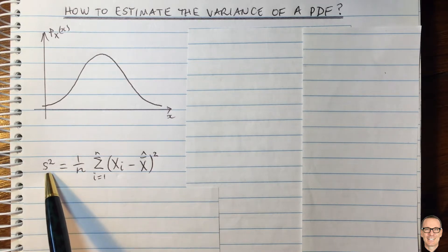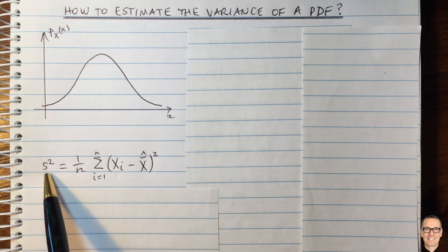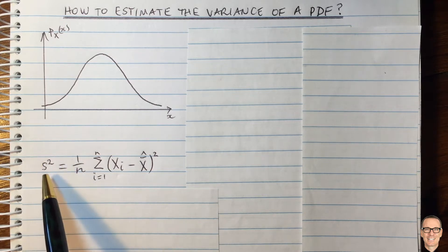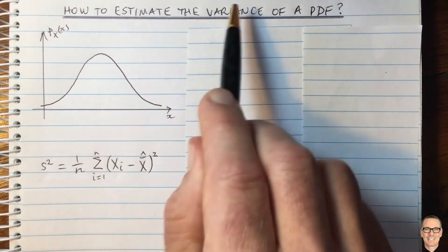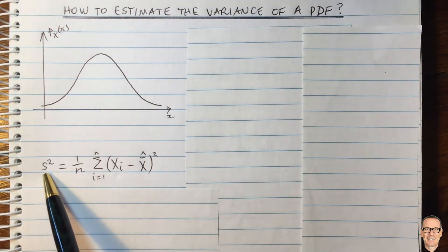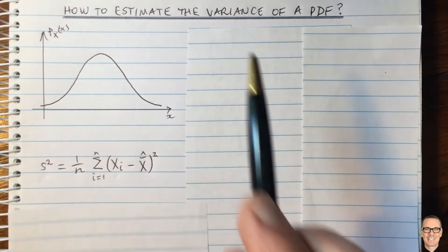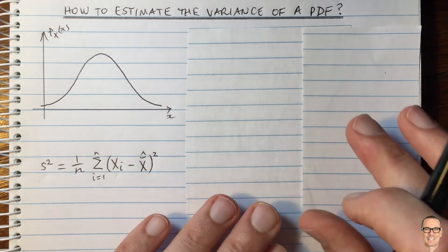We would now like to know something about the mean and the variance of this random variable. This is where it can get a little bit confusing. Sometimes people end up going around in circles, because we want to know the mean of an estimate of the variance, and we also want to know the variance of an estimate of the variance. So let's try and take it one step at a time.